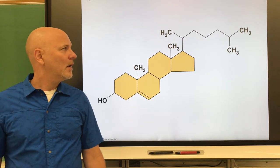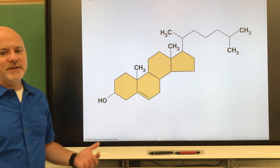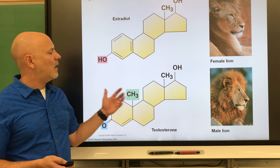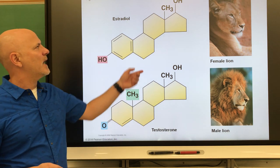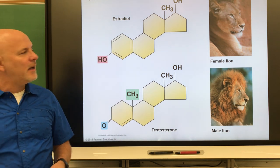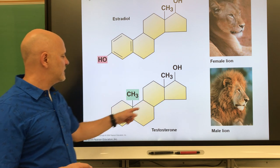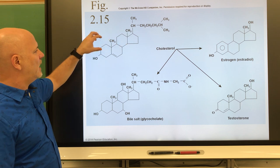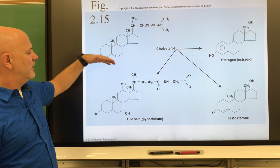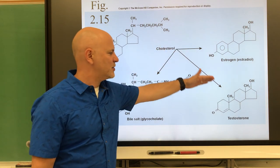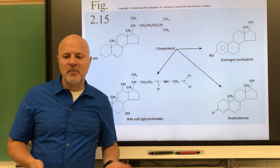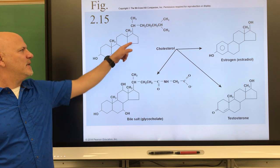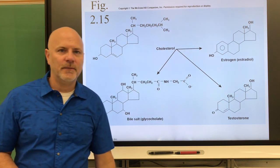Steroids are also a group of lipids. Steroids are hormones like testosterone and estrogen. What's notable about steroids is they all have a four-ring structure. For example, cholesterol can be used to make estrogen, testosterone, bile salts, and even vitamin D. Calling something a steroid simply means it has that four-ring structure.